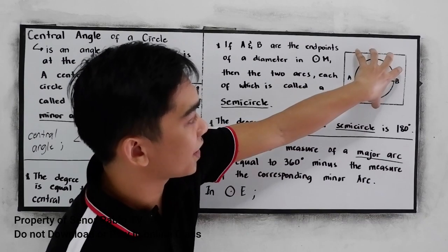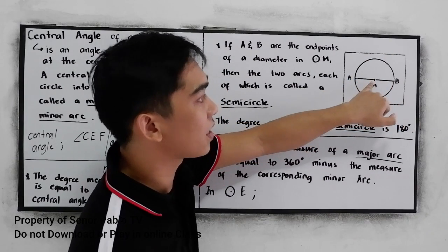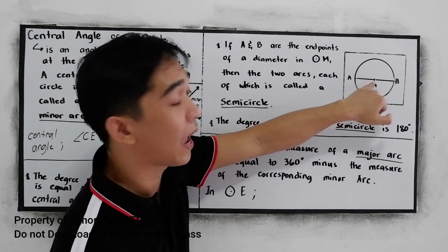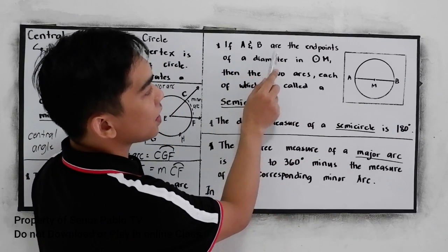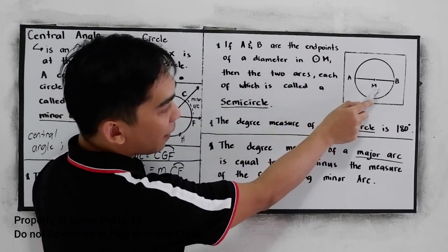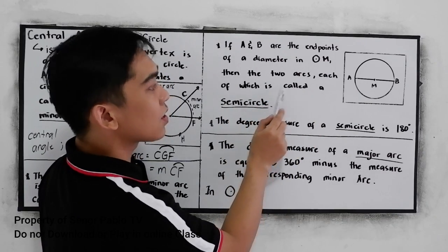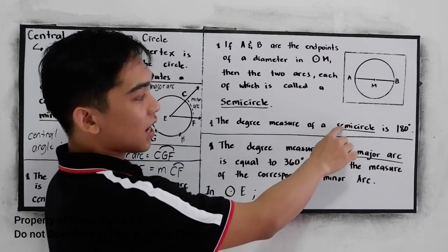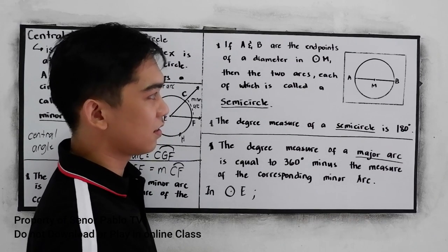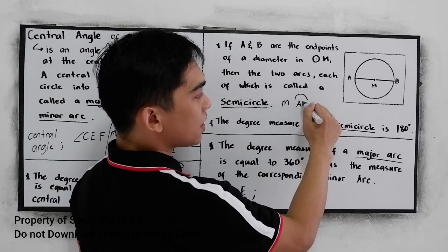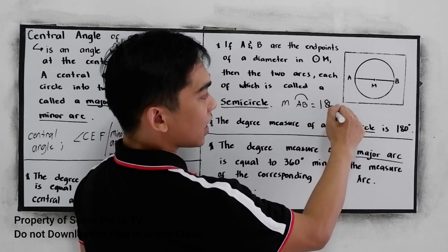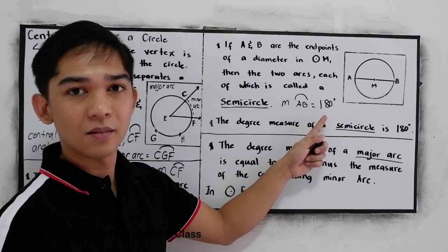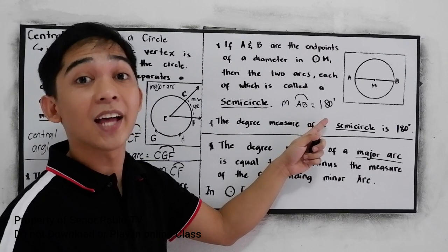We have another illustration here. We have a diameter, which is AB. If A and B are endpoints of a diameter in circle M, then the two arcs, each of which is called a semicircle. The degree measure of a semicircle is 180 degrees. So the measure of arc RAB is equal to 180 degrees — half of a circle, because one revolution is equal to 360 degrees.